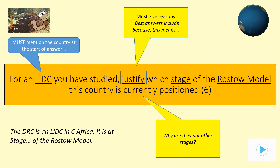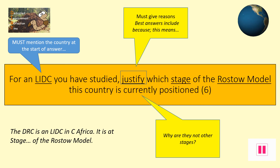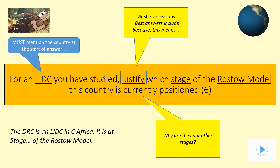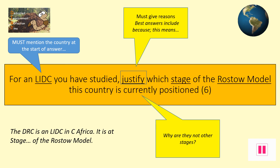On screen is a typical exam question. The key instruction word 'justify' has been boxed, meaning you must show reasoning. The key parts of the question have been underlined so you know what is really being asked: explain what stage on the Rostow model the DRC is and why it is not stage one or three. Remember, with case studies always start your answer by mentioning the country. For this question you should begin by stating the name of the country being investigated — why not start using the italic sentence shown on the screen.